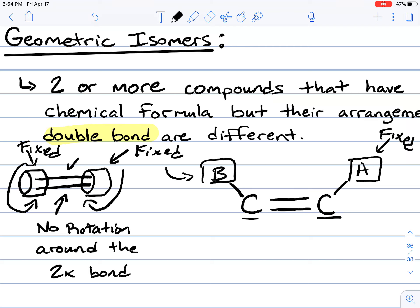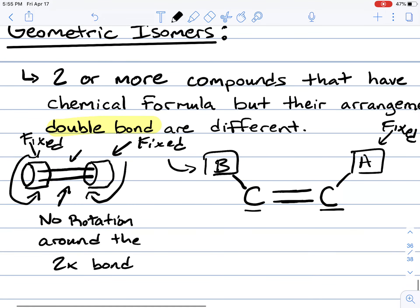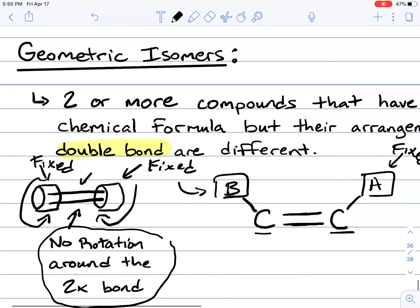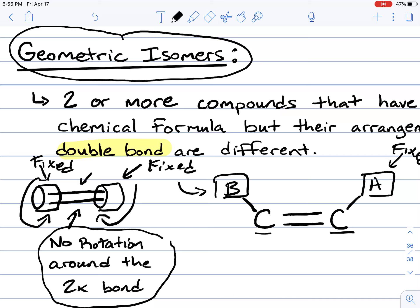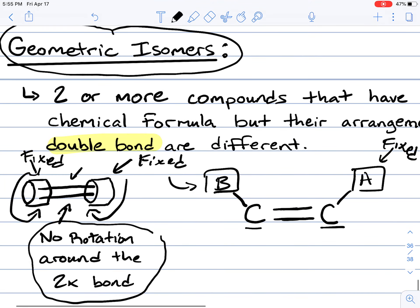You cannot rotate the marshmallows or the attachments found on those carbons sharing a double bond. Because those positions are fixed, it creates what is known as a geometric isomer. It's this reason — that there's no rotation around the double bond — that we have to consider the geometry of double bonds. If they have different geometries, then they are isomers of each other.